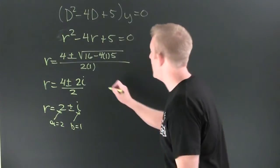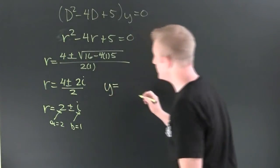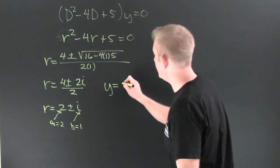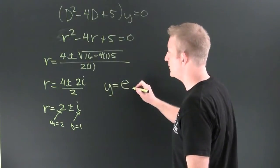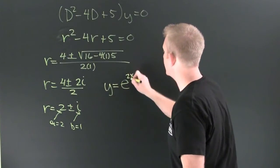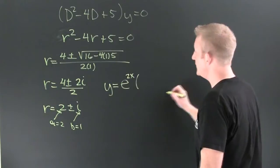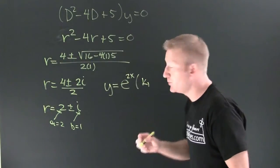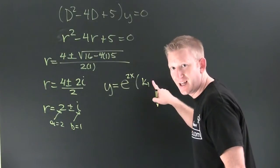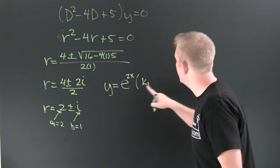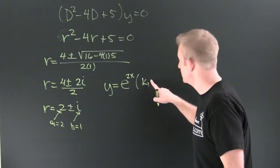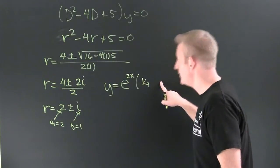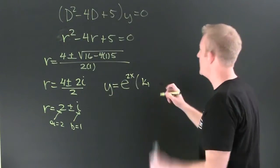Our general solution y is equal to e to the real part 2x, and then inside here I'm going to have my constant k1. Now if this had been a repeated root, this would have been k1 plus x or k1 plus k2x and so on, but it only happened one time.